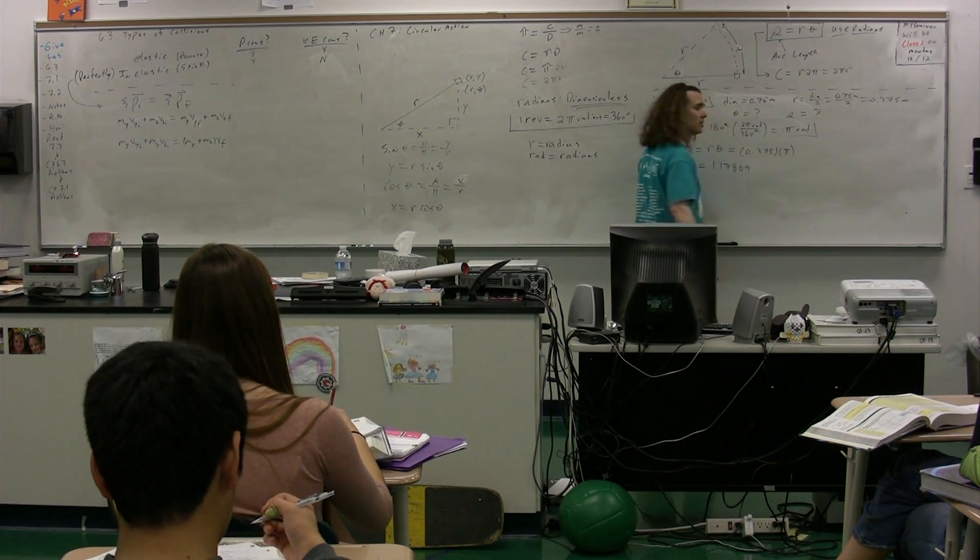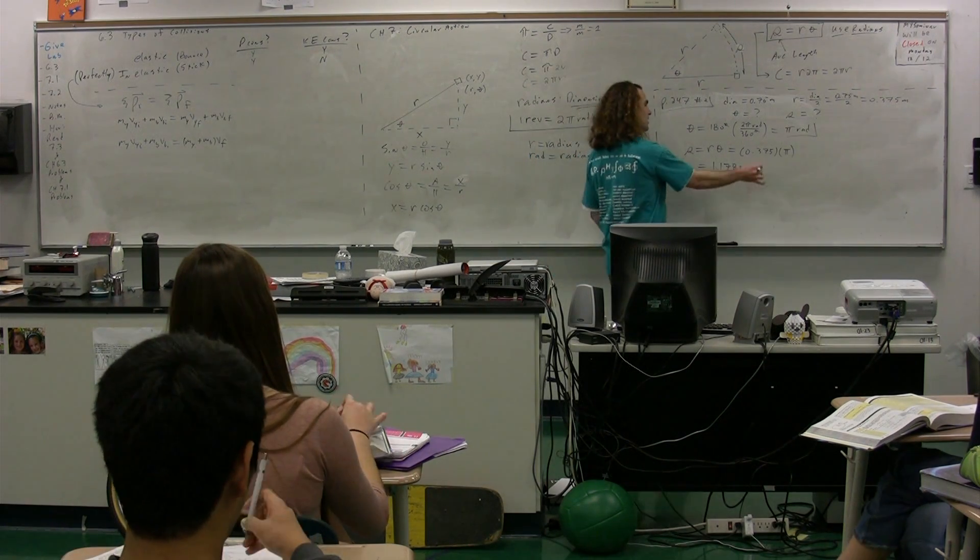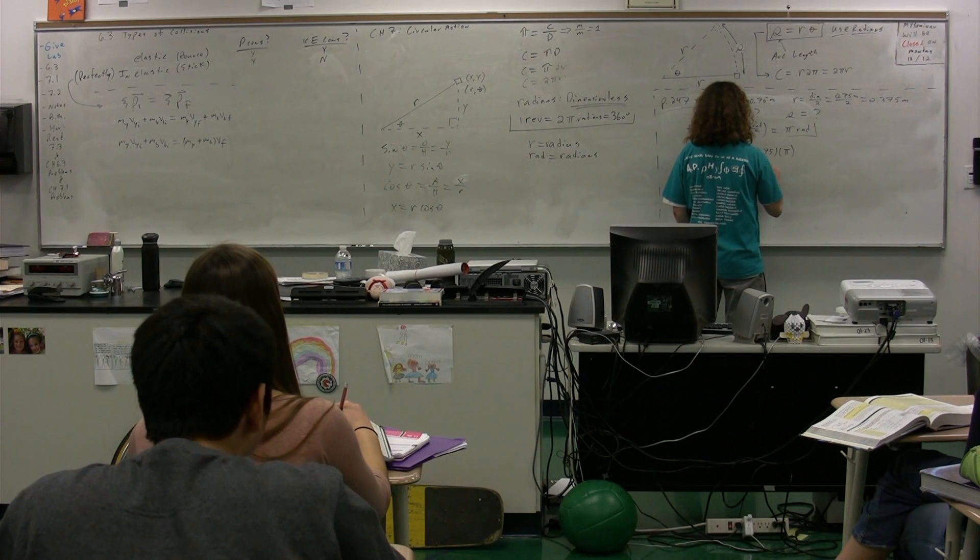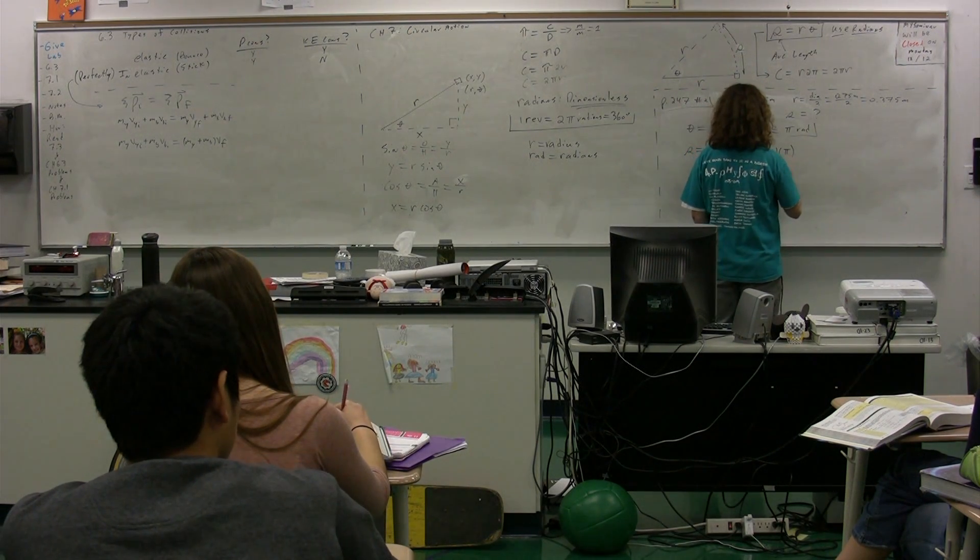1.17809. Thank you. What are the dimensions on this? Dan and her were helping work through it. What are the dimensions on the radius? Meters. Meters multiplied by the dimensions on pi. Radians. Meter radians.